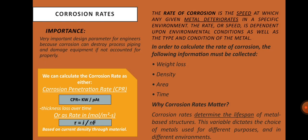The importance of corrosion rates: the rate of material removal is an important design parameter for engineers because corrosion can destroy process piping and damage equipment if not accounted for properly. We can calculate the corrosion rate as either corrosion penetration rate (CPR), thickness loss over time, or as rate in moles over m² per second, based on the current density through the material. The rate of corrosion is the speed at which any given metal deteriorates in a specific environment, dependent on environmental conditions and the type and condition of the metal.